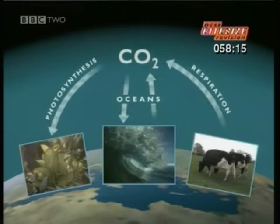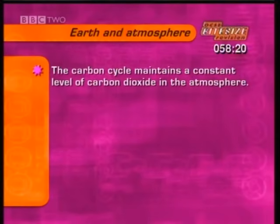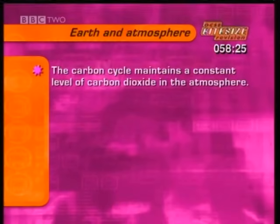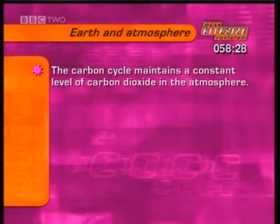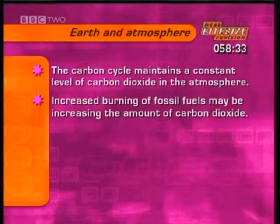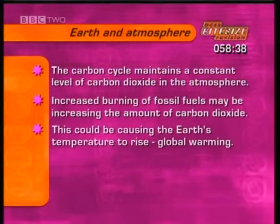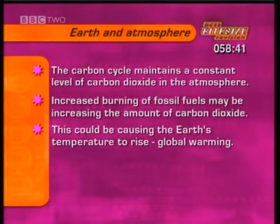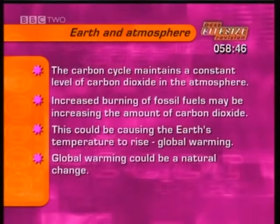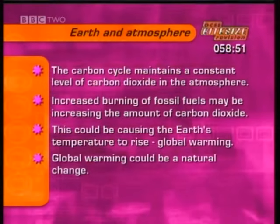But human activity is now increasing carbon dioxide levels. The carbon cycle of respiration and photosynthesis among animals and plants maintains a constant level of carbon dioxide in the atmosphere. There's also concern that burning fossil fuels, like coal and petrol, is increasing the amount of carbon dioxide and causing the Earth's temperature to rise — that's global warming. Others say that global warming is just one of the many natural long-term temperature changes that have happened throughout the Earth's history.